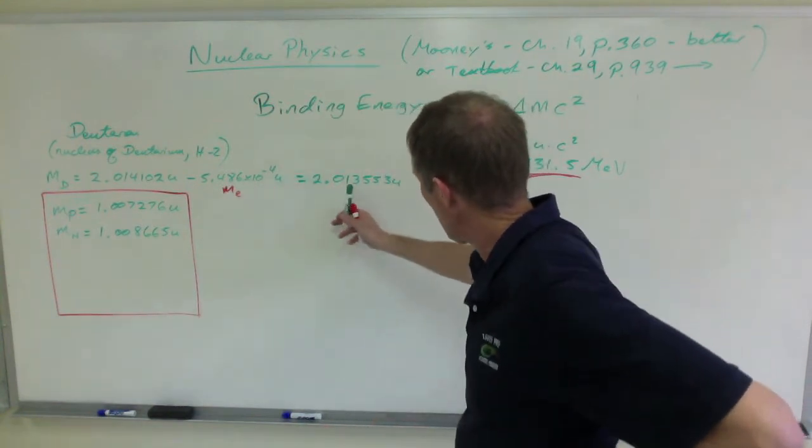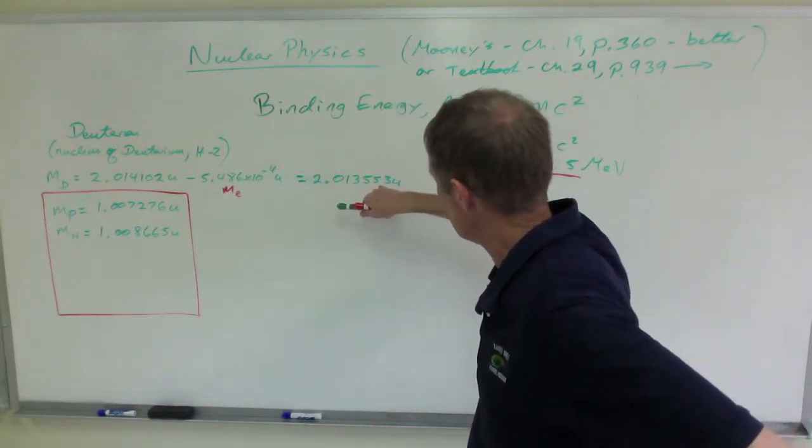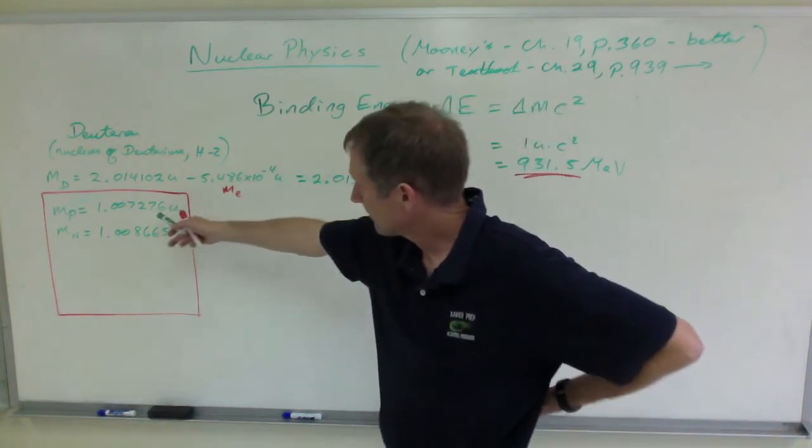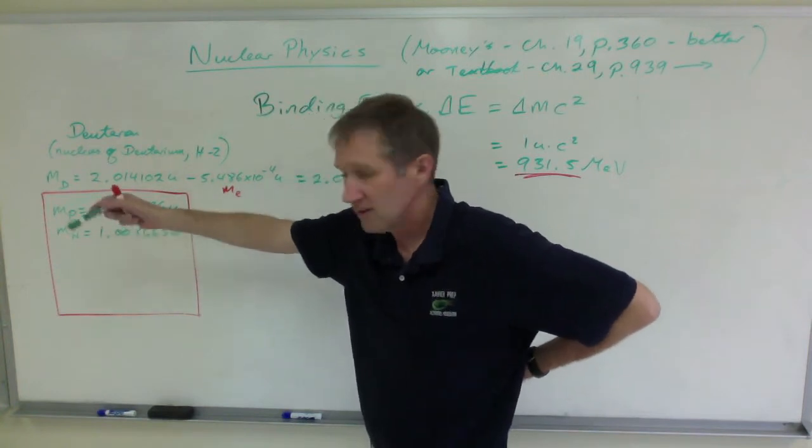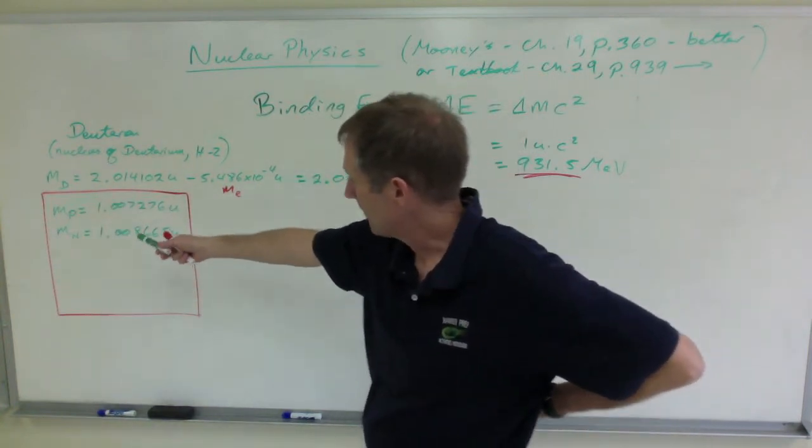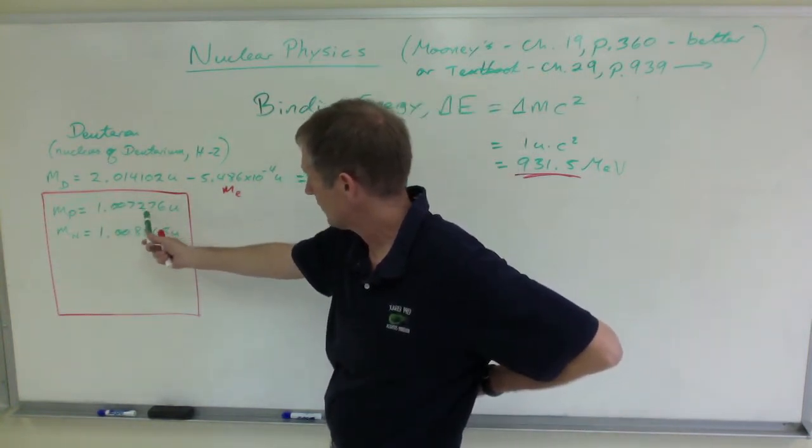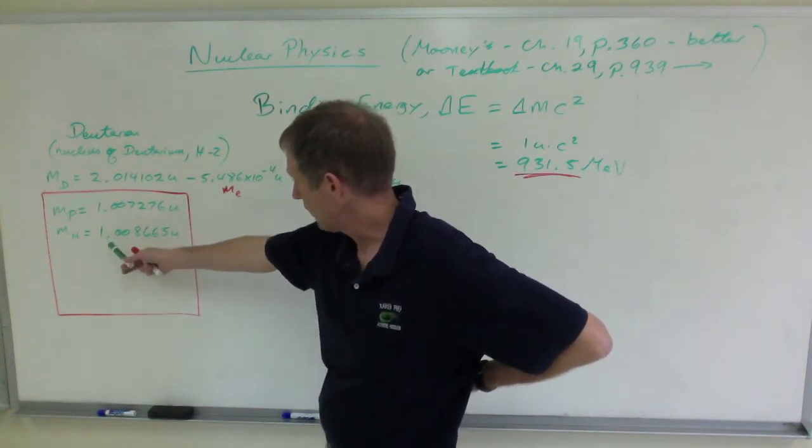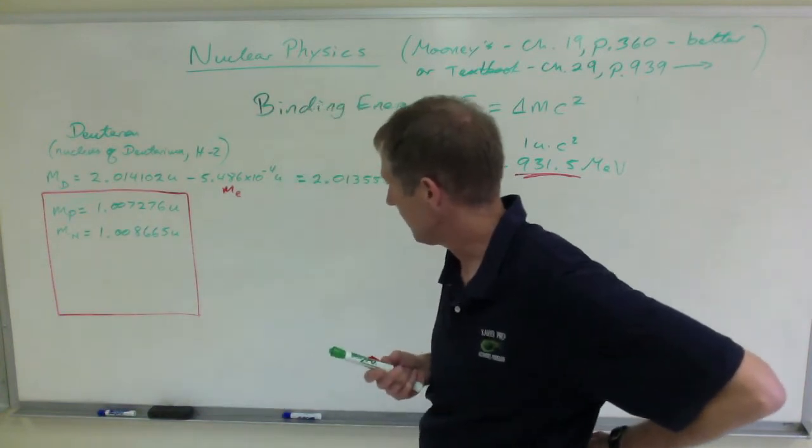So I subtracted that out. Now I have the mass of the deuteron, the deuterium nucleus. That's the nucleus itself. Well, here's the mass of a proton. This is all in the textbook. The mass of a proton is 1.007276 u's, unified mass units, and a neutron at 1.008665.